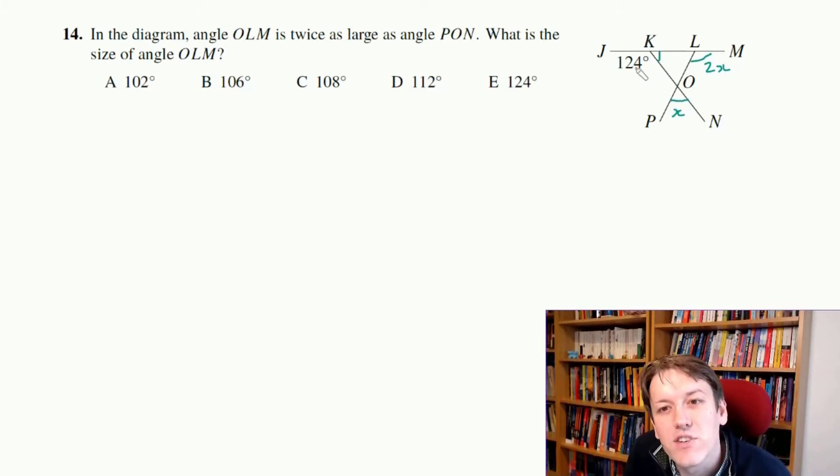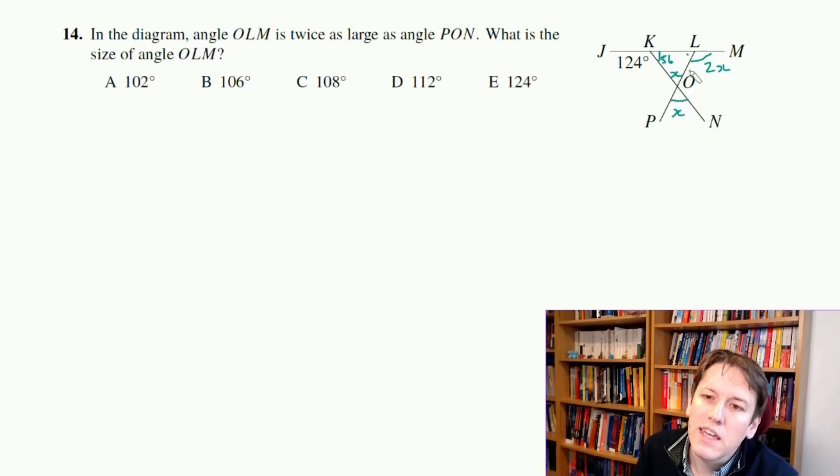So this angle in here is 180 minus 124, that's 56. And, okay, these are opposite angles, so that one would also be X, and now I can see that I can sort of work it out based on this triangle here. Let me just see if I can write that a bit more clearly. Maybe if I don't draw that angle, I can write X. So this angle here is 180 minus 2X, but it's also 180 minus 56 minus X, because of the angles in the triangle, right?